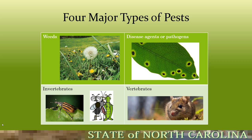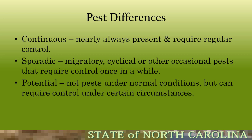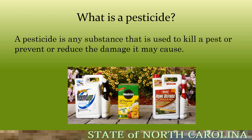We're doubtfully going to deal with vertebrates much in horticulture — that's left to the structural pest guys — but we may run across them occasionally. Pest differences: you have continuous pests, which are nearly always present and require regular control, such as clover in turf. Sporadic pests, like brown patch, occur occasionally depending on weather and irrigation. And potential pests — not pests under normal conditions but can require control under certain circumstances, like Bermuda grass in a fescue lawn.